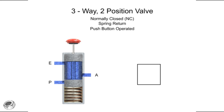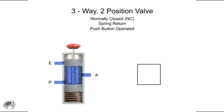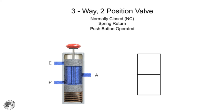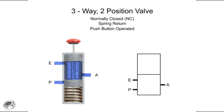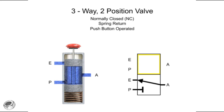The most important applications in fluid power for three-way valves are for directional control. Here we have a typical three-way valve with two operating positions. This valve has an inlet port P, exhaust port E, and output port A. In its normal position, inlet port P is blocked and outlet port A is connected to exhaust port E. The second position allows fluid to flow from pressure port P to outlet port A and blocks exhaust port E.